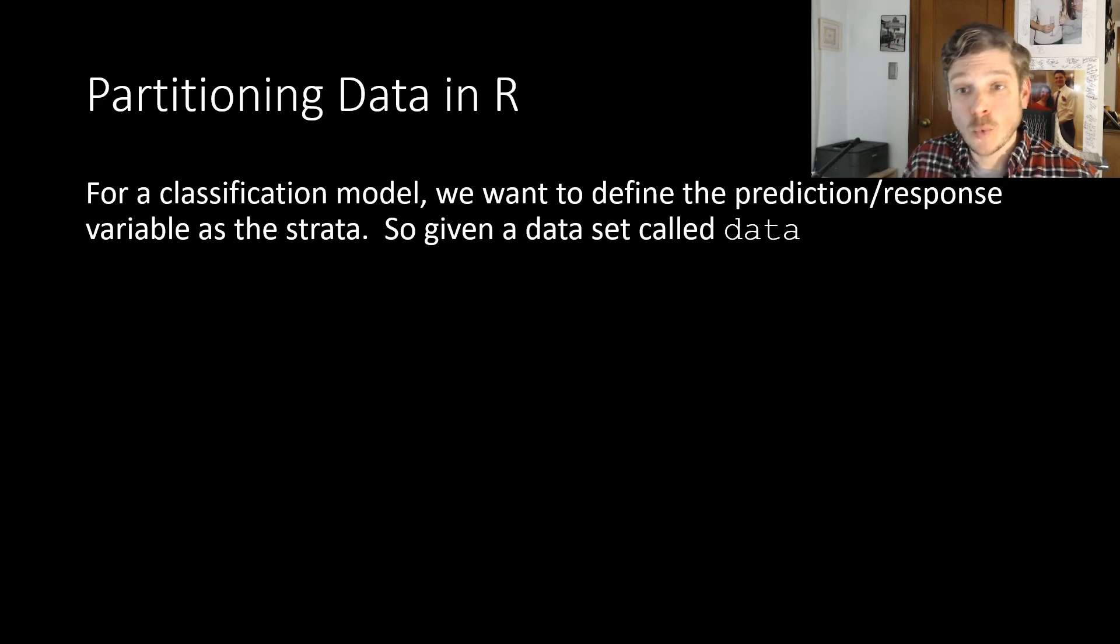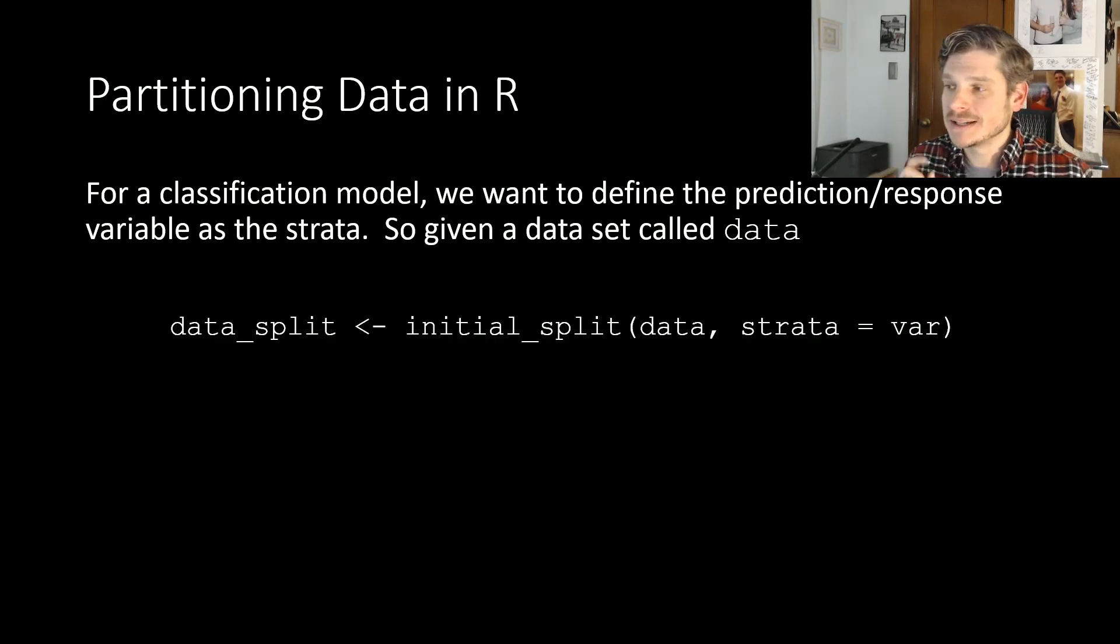Now, for a classification model, we want to make sure that we define our prediction or our response variable as our strata, all right? So that way, it identifies from the get-go what variable it is we want to try to predict with our model. So, for example, if I'm given a data set called data, I'm going to put my data set data into the initial_split function, and then I want to define my argument strata to equal whichever variable it is I hope to predict. And then, again, you want to store this in some new object. So again, like data_split. It can be as descriptive as possible. Usually, again, I just include the underscore and then what I just did. So if my data was called data, then when I split it up, it's called data_split, all right? And so, again, you want to make your first argument the data, or you could pipe it in. And then, again, you typically do want to define what the strata is going to be that you're trying to predict later on.